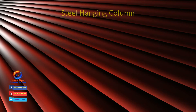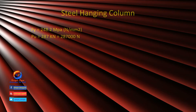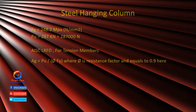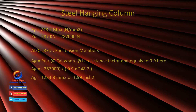We have Grade 36 steel, which has Fy equal to 248.2 MPa (N/mm²). Pu equals 287 kN, or 2.87 × 10⁵ N, which is the tension force in the column. In AISC LRFD for a tension member, Ag = Pu / (φ × Fy), where φ is the resistance factor equal to 0.9 for a tension member. Inputting the values and calculating, the result is Ag = 1284.8 mm².